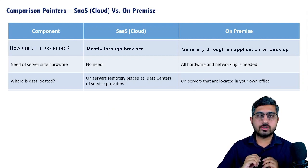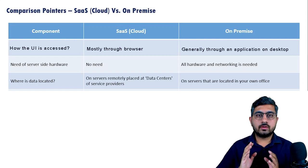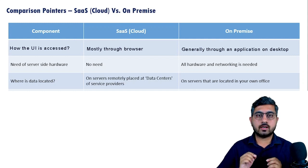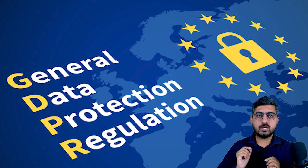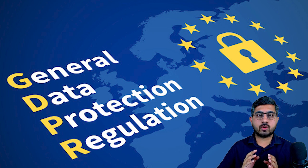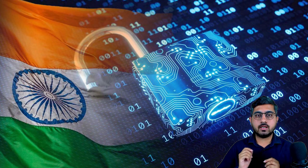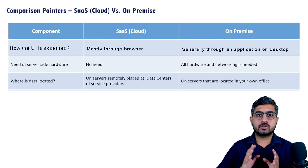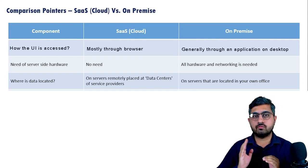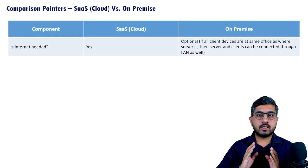On the other hand, in case of on-premise software, the data is located at your end only. More and more countries are now focusing on data-related regulations, requiring that data generated in their country be stored within that country. For example, in the UK and European Union, regulations like GDPR — General Data Protection Regulation — make it essential for service providers to store citizens' data within those countries. Even in India, similar laws and regulations around data storage are now being created.